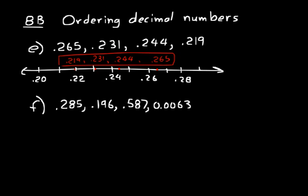Let's do another one, this is a little more complicated, but let's just think about it in our head. And think about a number line, think about these numbers here, and we have .196, we know that's smaller than .285 and .587, but then we have .0063. Just think about that, that's .0063 in the ten thousandths place.